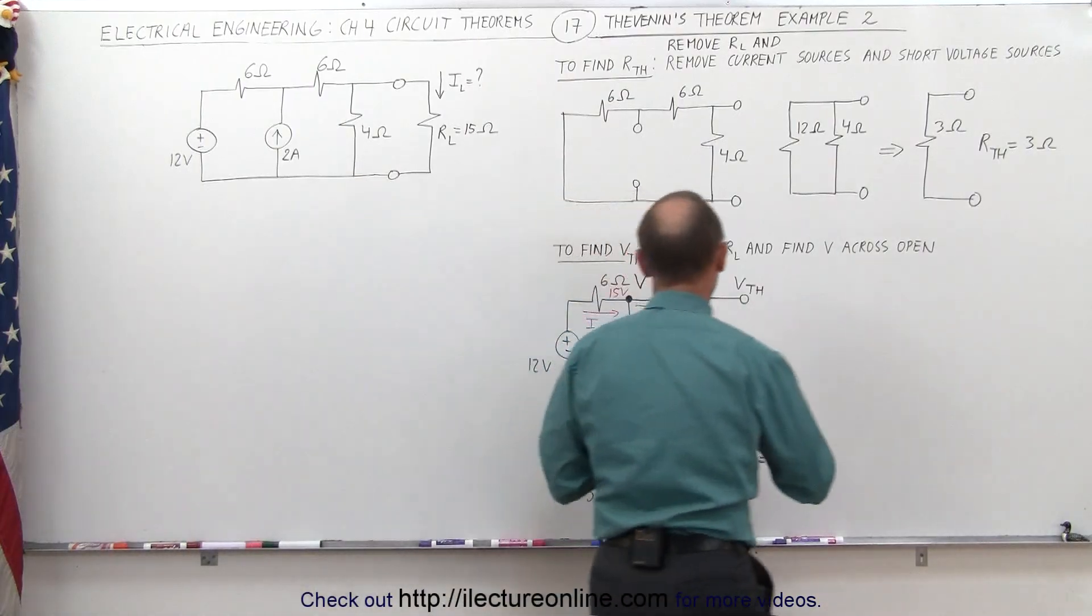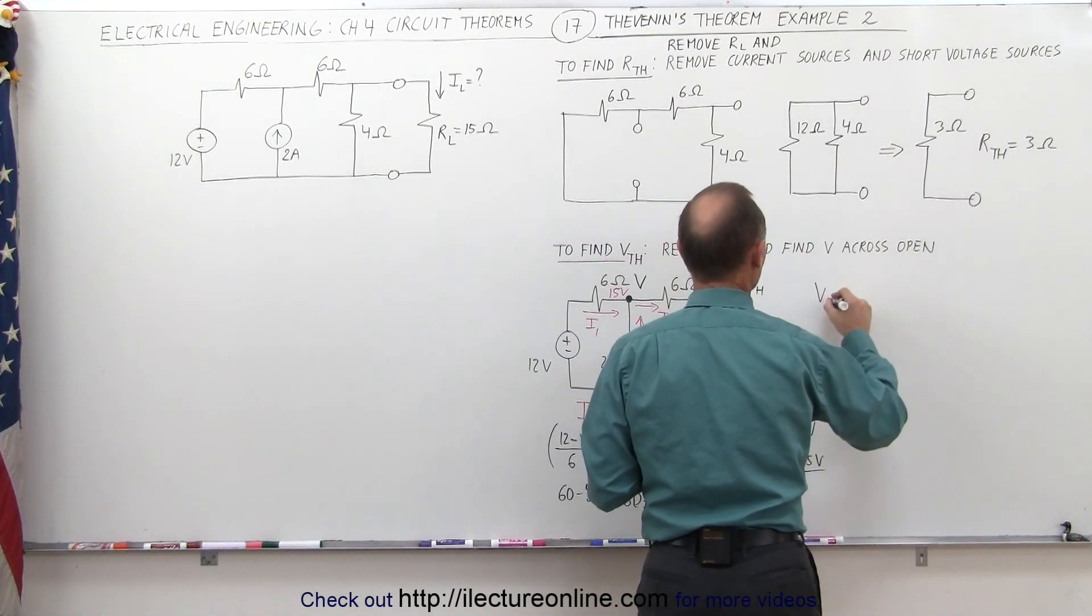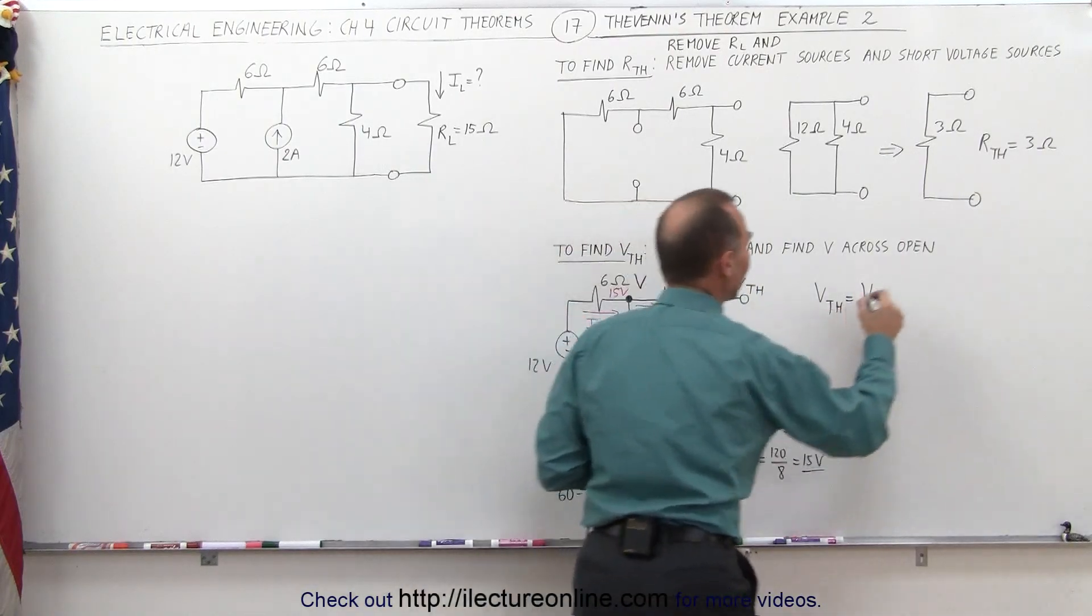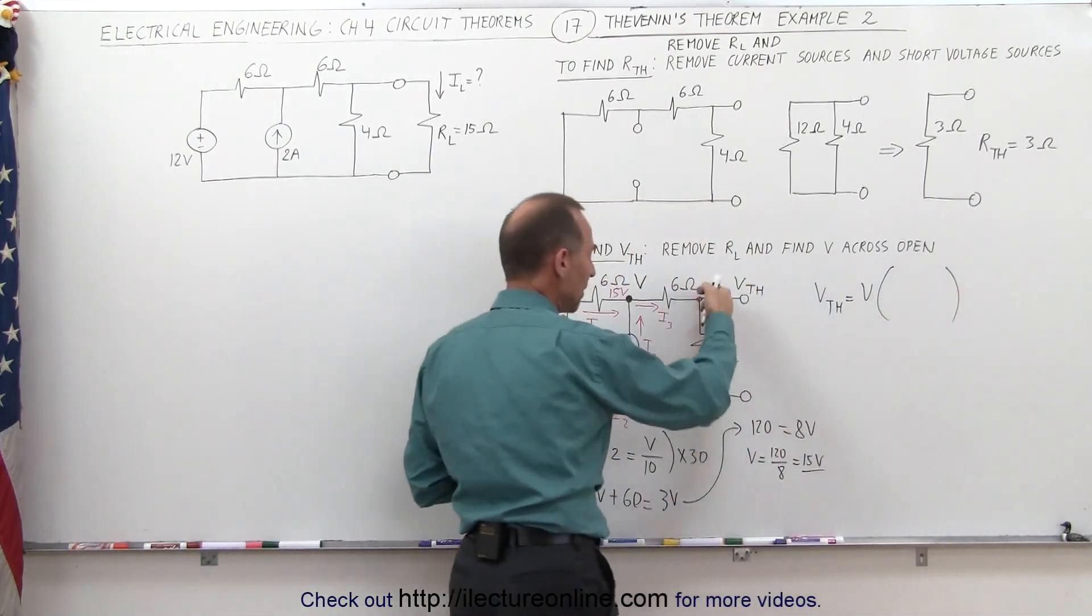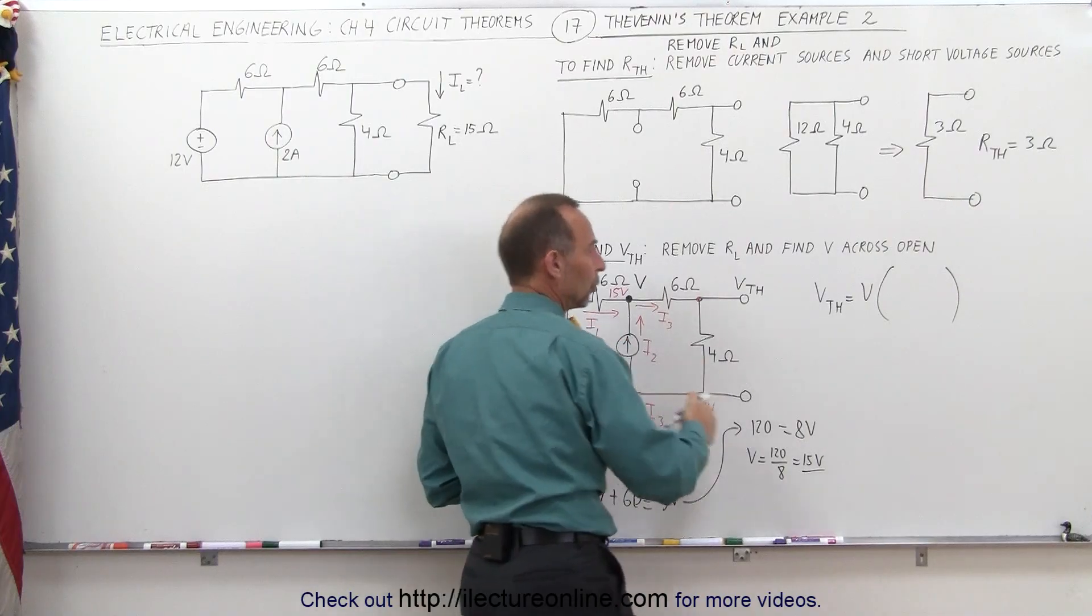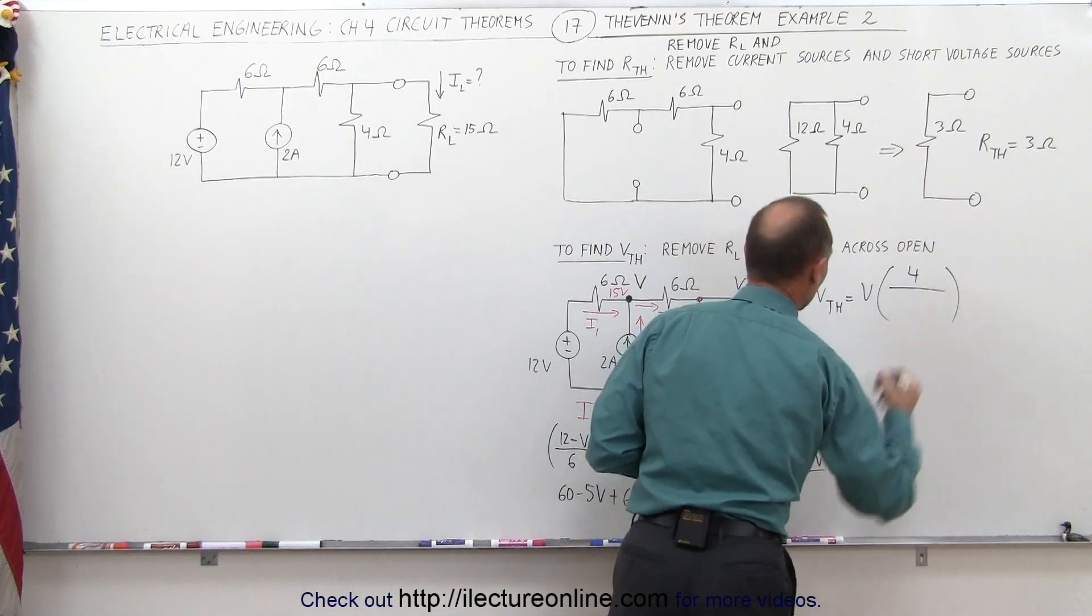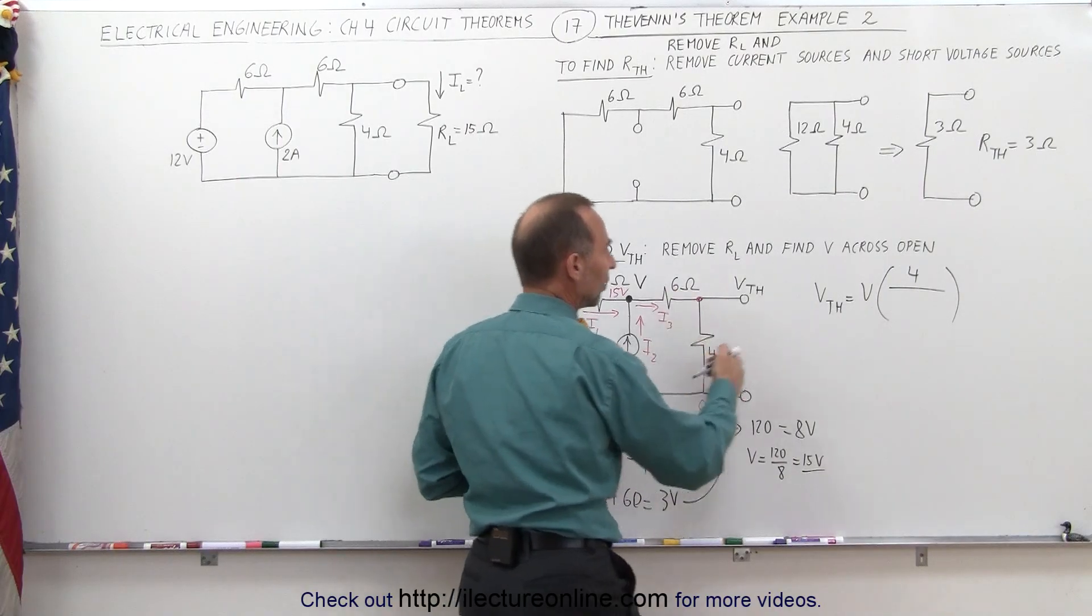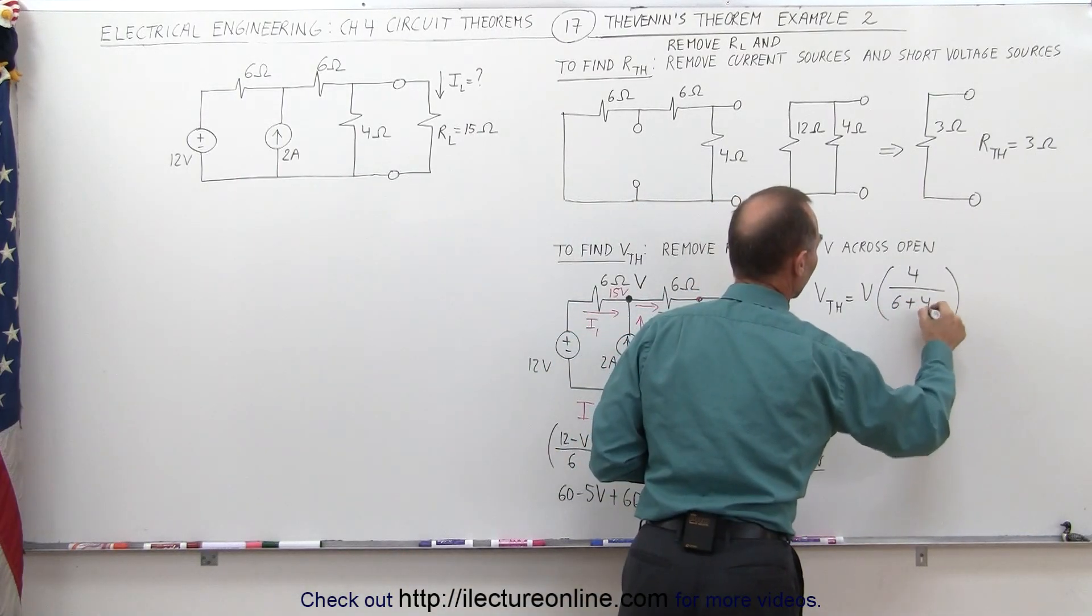What I can say here is that the Thevenin voltage, V_Thevenin, is equal to the voltage at this node times the ratio of the remaining resistance that the current must go through, which is 4 ohms, divided by the total resistance that's there, which is 6 plus 4.